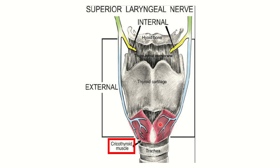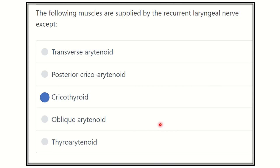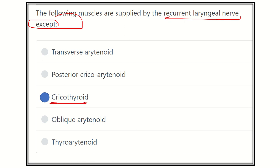So our answer is the cricothyroid muscle. This muscle is not supplied by the recurrent laryngeal nerve — it is supplied by the external laryngeal nerve, which is a branch of the superior laryngeal nerve, which in turn is a branch of the vagus nerve. Thank you.